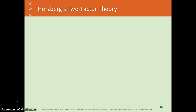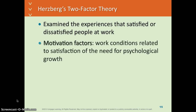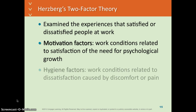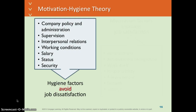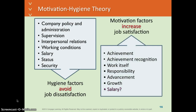Herzberg was another researcher who looked at the two-factor theory. He said that there were different ways that people were motivated for satisfaction, but there was also a need to avoid discomfort and pain — or not be dissatisfied. So there are certain things you want to avoid for job dissatisfaction, and they won't necessarily motivate you, but there are certain things that will increase your job satisfaction based on motivation factors.